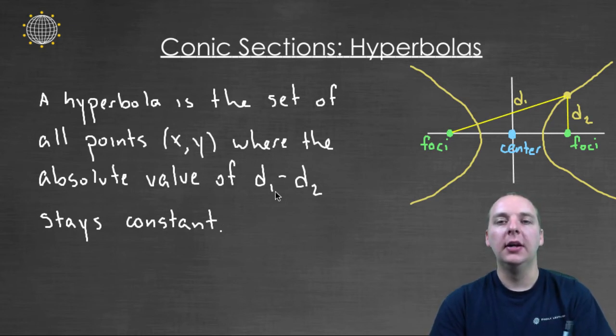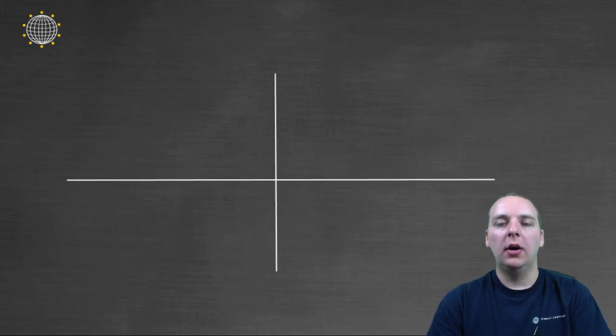So it creates this weird shape that almost kind of, sort of resembles two parabolas. It's not two parabolas, but it kind of has that look to it. You have these two foci that are bending away from the center around the two foci.